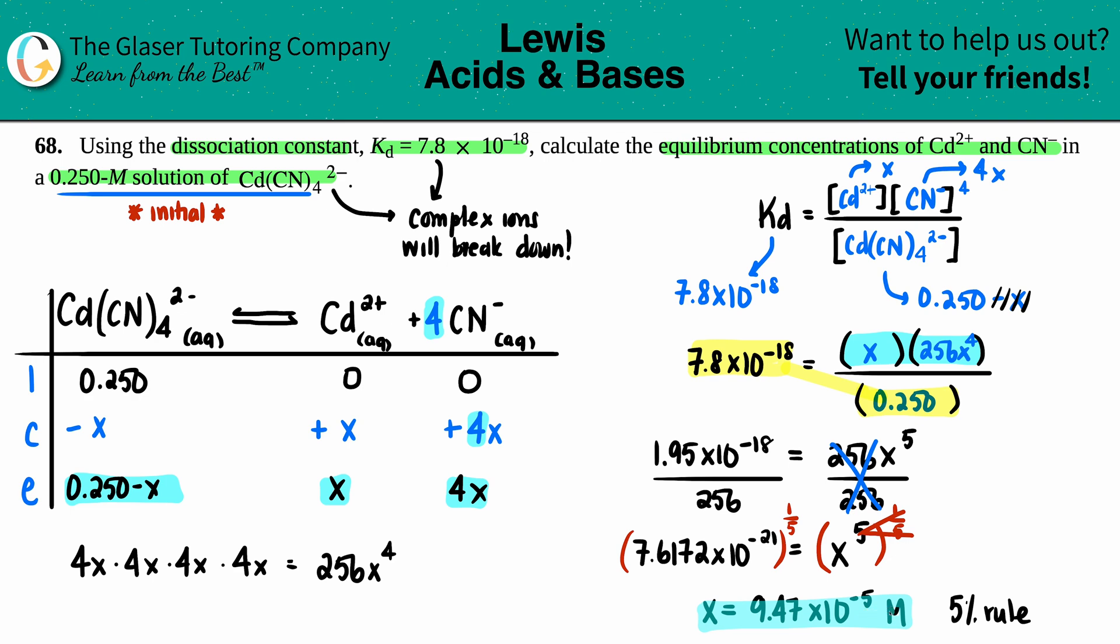We wanted to calculate the equilibrium concentrations of both the Cd2+ and the CN-. The Cd2+ ion was just x, and we found out what x was. So the cadmium ion concentration is 9.47 times 10 to the negative fifth molarity.